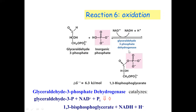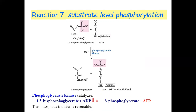Our product is 1,3-bisphosphoglycerate. Then we have reaction number 7, which is substrate-level phosphorylation. In this reaction we have again involvement of a kinase enzyme. We already know we have a compound with two phosphate molecules — that is 1,3-bisphosphoglycerate. From this compound, one phosphate molecule is released, gained by ADP to form ATP — adenosine triphosphate. So this is the reaction where we gain our concerned product, ATP.